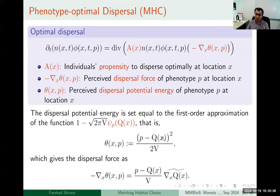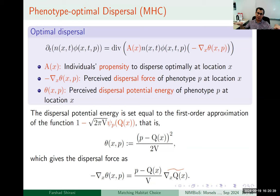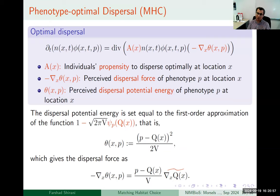When we take the gradient of this potential energy, we see that not only does the difference between the phenotype and the optimal phenotype matter — the gradient of the environment also matters, which makes sense: if there is no gradient in the environment, there is no point in making optimal dispersal because the individual won't gain any benefit. But if there is a large gradient in the environment, there should be a strong optimal dispersal, because the individual can get a lot of benefit by moving.